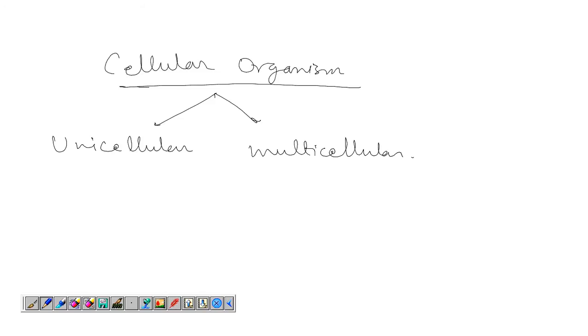Now we will discuss the cellular organism. The cellular organisms are of two types: unicellular and multicellular. This unicellular organism is made up of one cell or single cell, and it performs all the metabolic activities what is required by that organism. And we have examples like amoeba, paramecium, and bacteria.